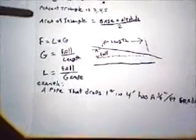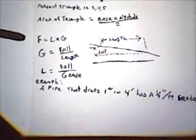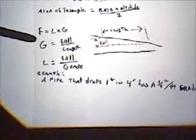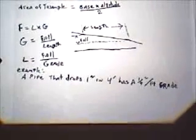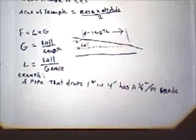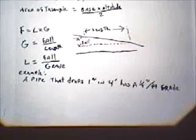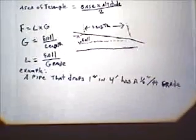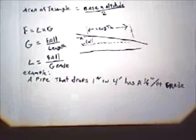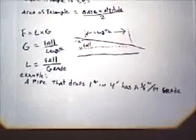So, in this example, a pipe that drops 1 inch in 4 feet. So, in other words, we have a 4 foot run, and in that 4 foot run, it drops 1 inch. That could be calculated as having a quarter inch per foot grade. We also call it pitch.